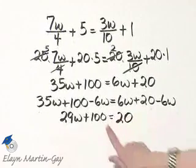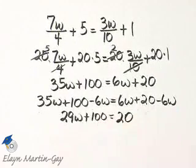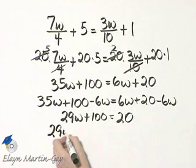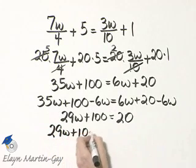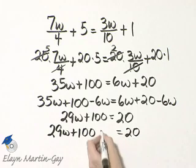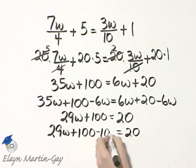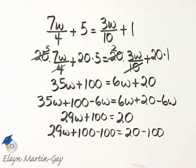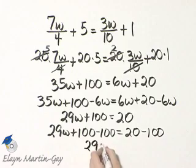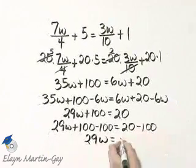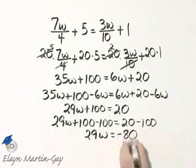How do I finish solving? I will subtract 100 from both sides. So here's my left side, 29w plus 100, leave a little space, is equal to 20. I will subtract 100 on the left side, do the exact same thing on the right side. The 100 subtract out and I have 29w is equal to 20 minus 100, that's negative 80.